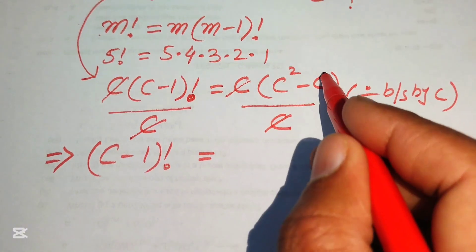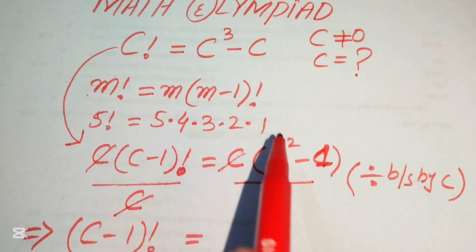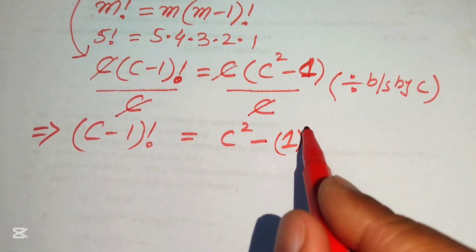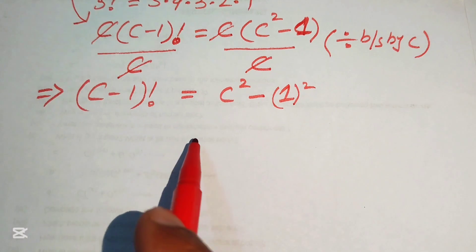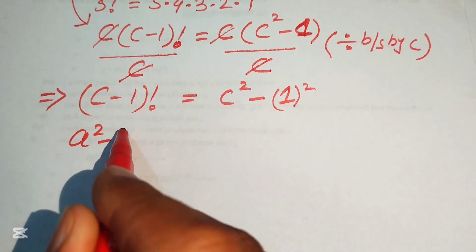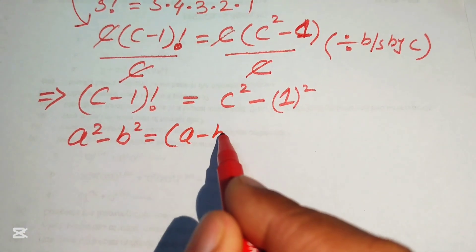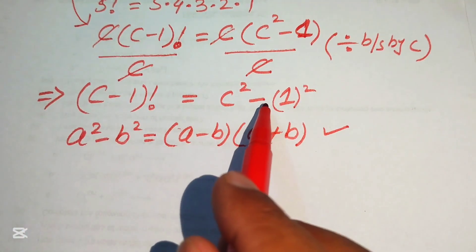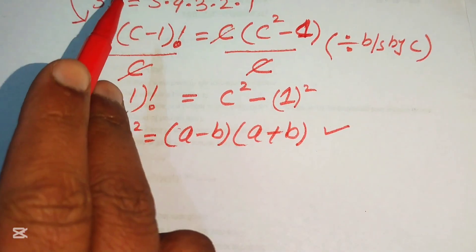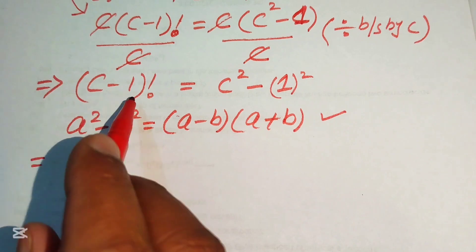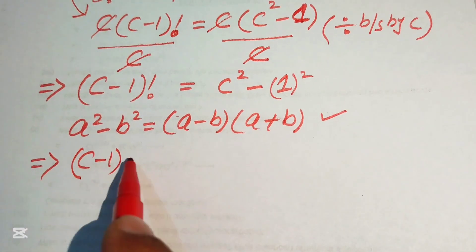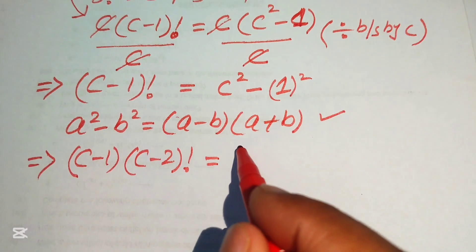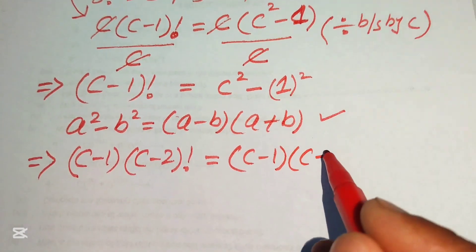After cancelling c on the right side we get c squared minus 1, which we write as c squared minus 1 squared. Using the algebraic identity a squared minus b squared equals (a minus b)(a plus b), the right side becomes (c minus 1)(c plus 1). We also expand the left side using the factorial formula: (c minus 1) factorial equals (c minus 1) times (c minus 2) factorial. So we have (c minus 1)(c minus 2) factorial equals (c minus 1)(c plus 1).